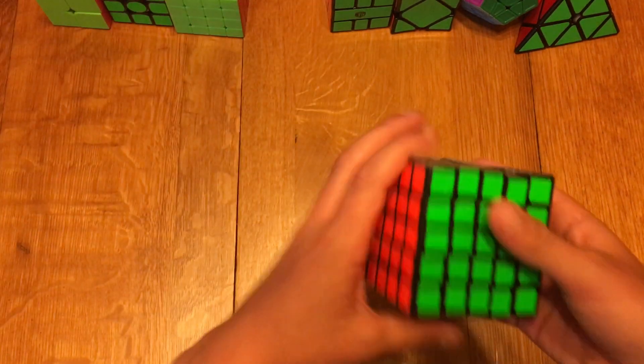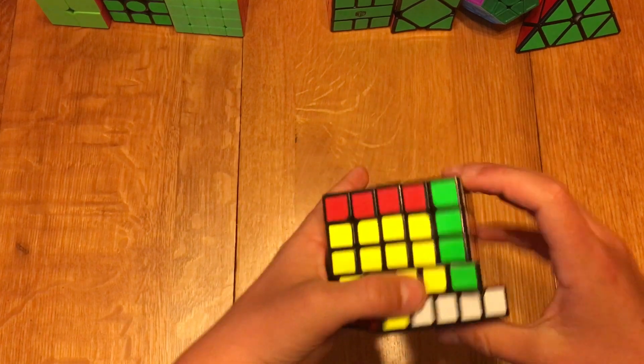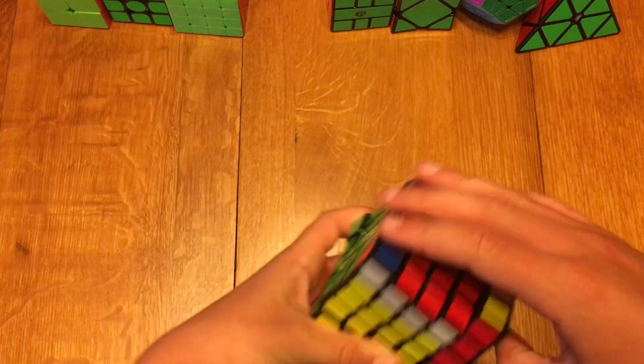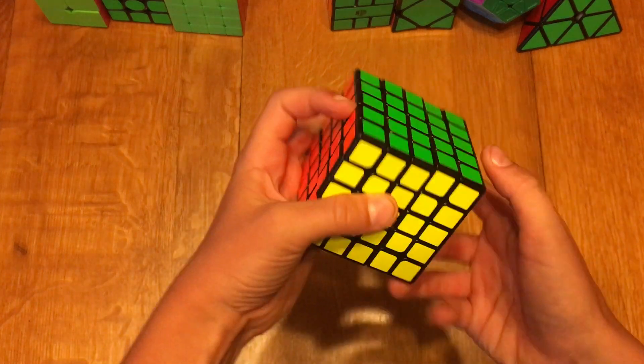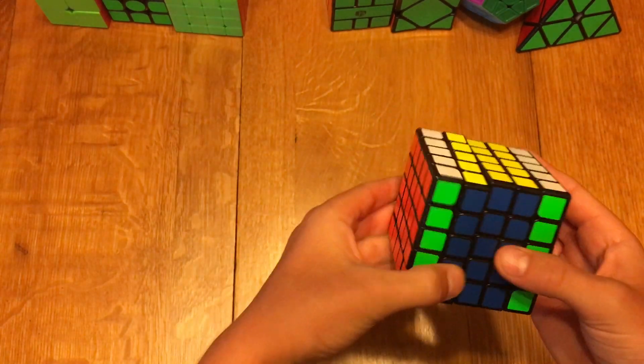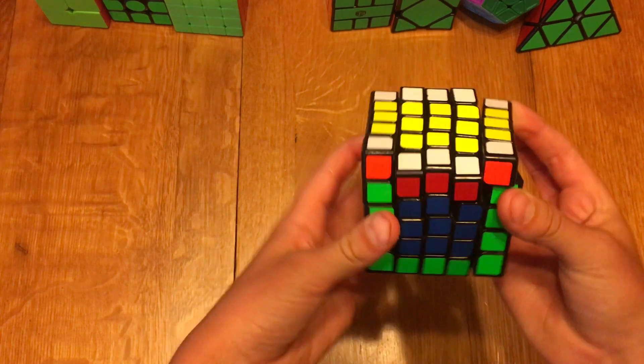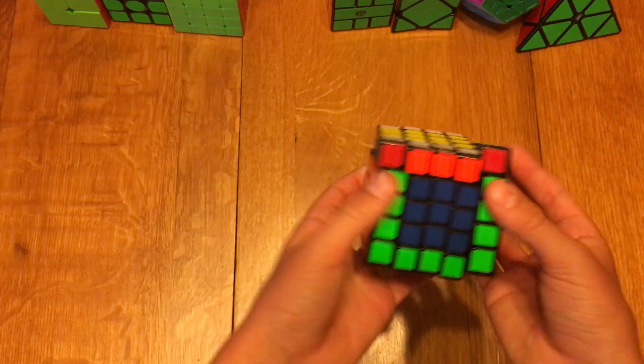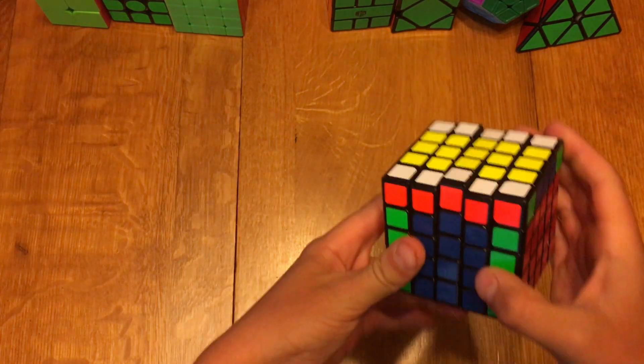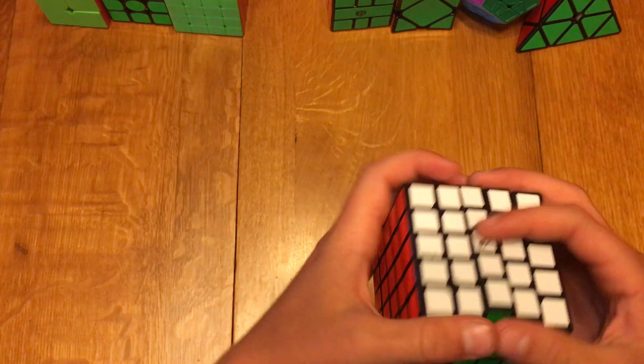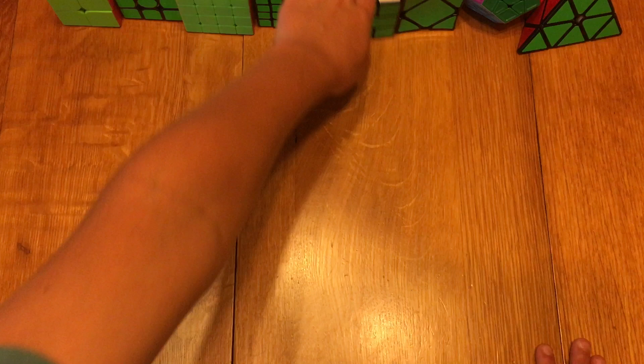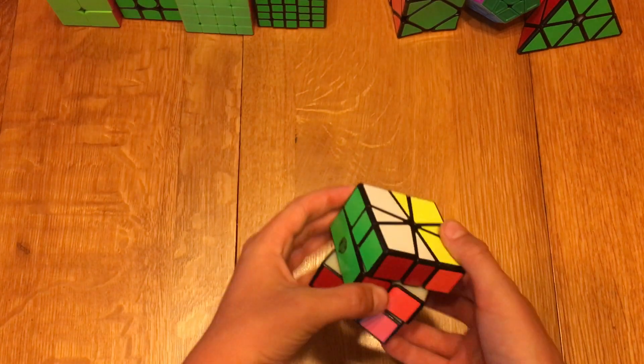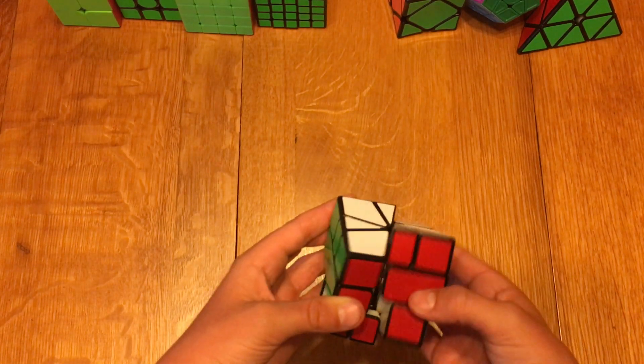For 5x5, I'm using the QiYi WuShuang, and I'm hoping to get a sub-3:25 average and a sub-3 minute single. For 5x5, I'm being very ambitious. I really want to get that.